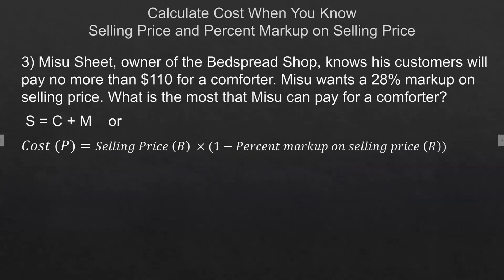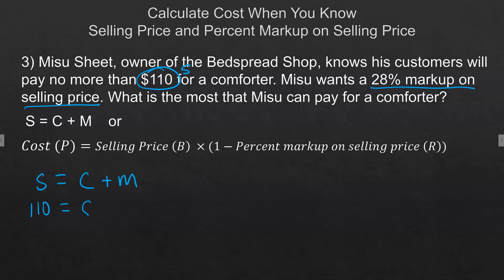Here's our next example. Mizu Sheet, owner of a bedspread shop, knows his customers will pay no more than $110 for a comforter. Mizu wants a 28% markup on selling price. What is the most he can pay for a comforter? We need to weed through this: $110 is our selling price, 28% is the markup on selling price. Using the equation, the selling price is $110, and the markup is 28% times 110. Remember to change the percent to a decimal.